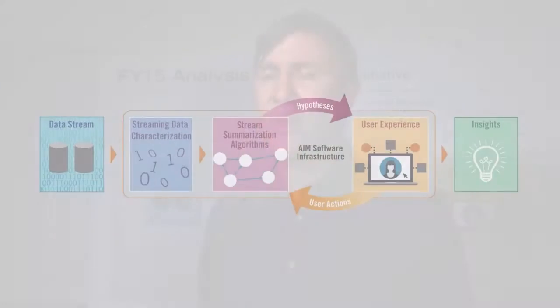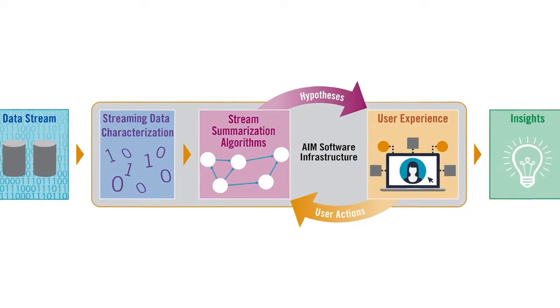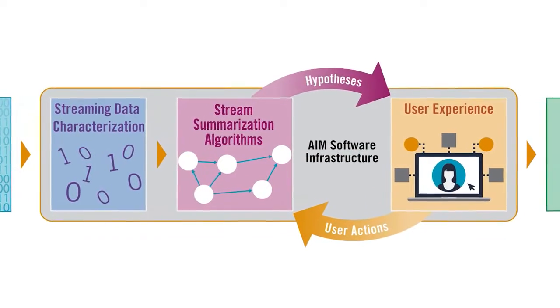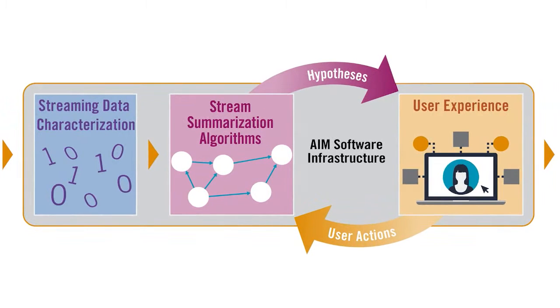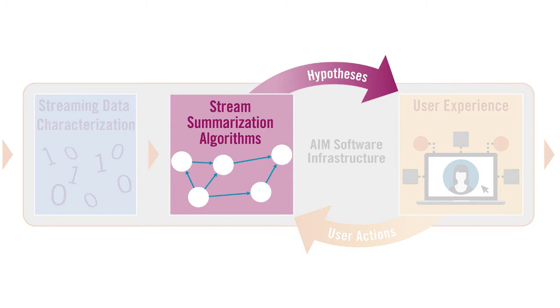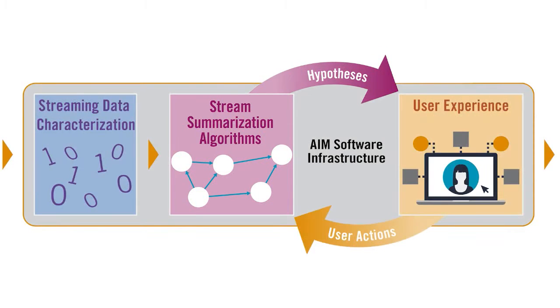We have research programs in three basic areas. First, we have research programs in streaming data characterization — that is, how can we analyze data as it comes straight off the stream and sample it correctly? Then we also have research in stream summarization algorithms — that is, how can we take the data which comes off of the stream, possibly sampled, and raise it to the level of summaries of what's going on in the stream that are relevant to the user?